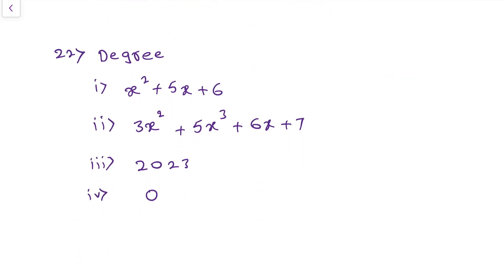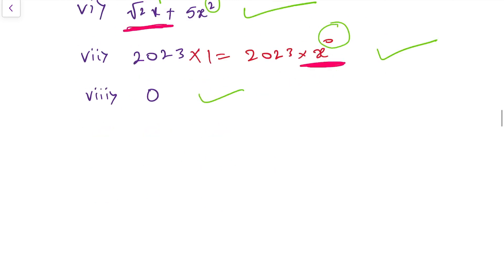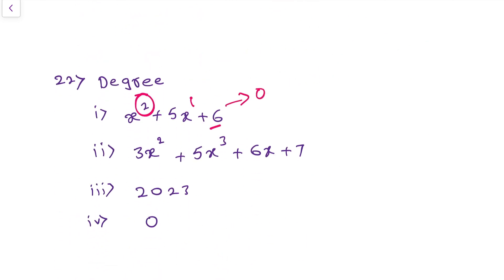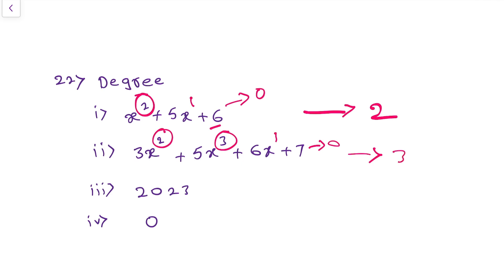Moving to the next: degree of a polynomial. Here, the power is 2; here power is 1 (nothing there means 1); and for constant, the power is 0. So 2, 1, and 0 — in these three, 2 is the biggest number, so 2 will become the degree. The highest power of a polynomial is the degree of the polynomial. For the second example, powers are 2, 3, 1, 0 — out of all these, 3 is the biggest, so 3 is the degree.